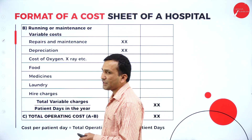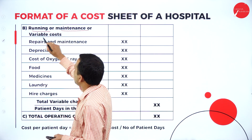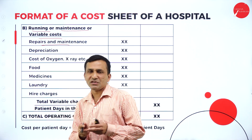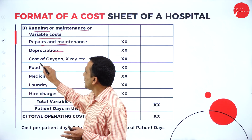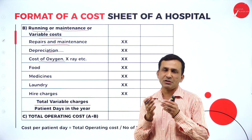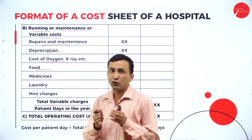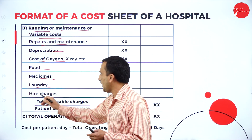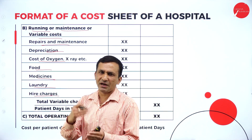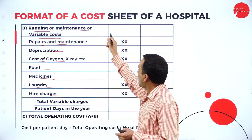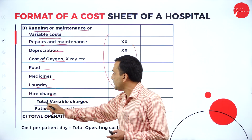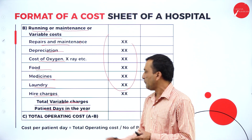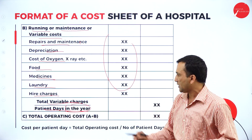Moving to the second category — variable cost, also called running or maintenance cost — which keeps changing or varying. Items under variable cost include: repairs and maintenance, depreciation, cost of oxygen, X-ray or ECG provided to patients, food supplied to patients, medicines supplied to patients, laundry charges, and higher charges — meaning if you don't have a specific service in-house, you get it from outside, which is the hire charge. After taking the total variable charges, divide by patient days in a year to get the variable cost per patient.